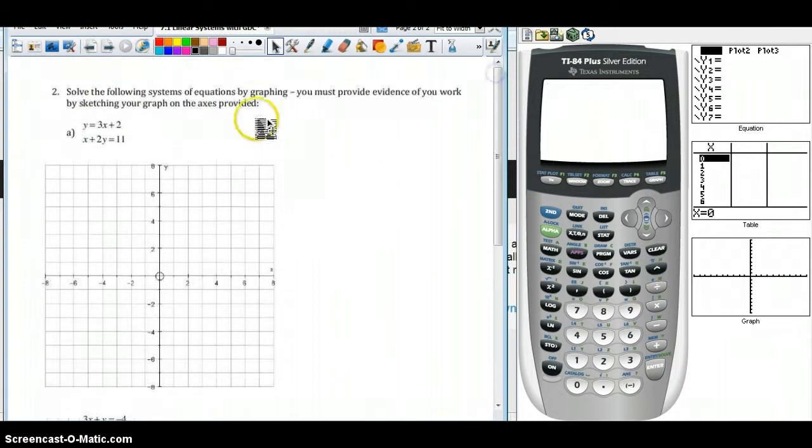We're going to look at the second page with our examples. In these two examples, we're going to use the TI-84 to solve the two linear systems in example two. As mentioned in the introduction on the previous page, the first step is to get both equations in standard form, the y equals mx plus b form. As you can see from the first equation, y equals 3x plus 2, this has already been done for us.